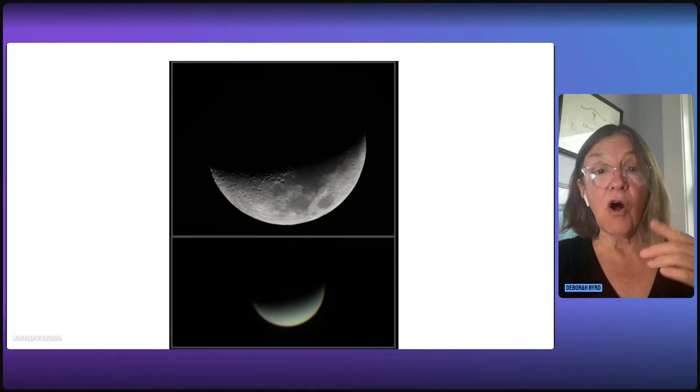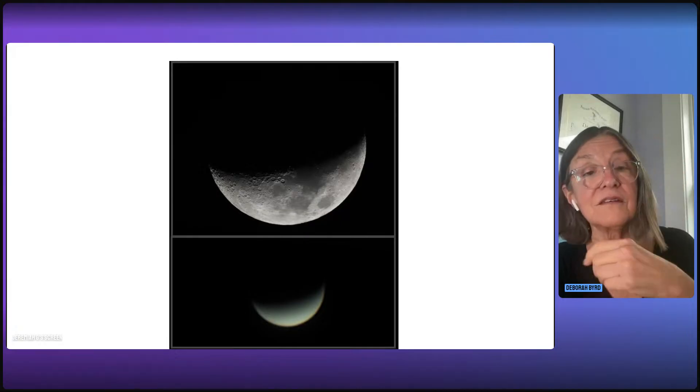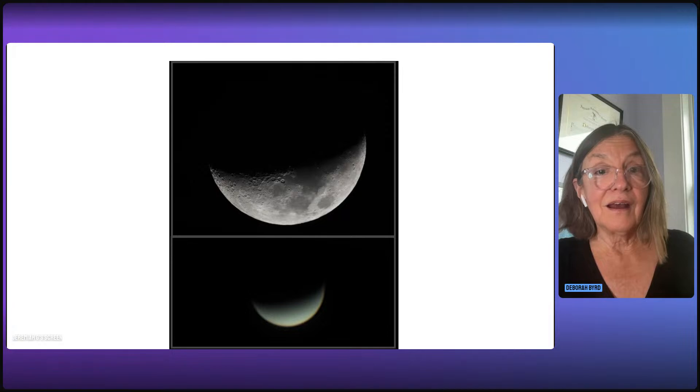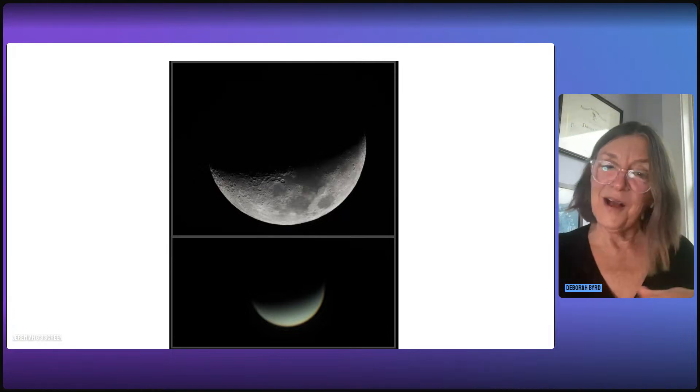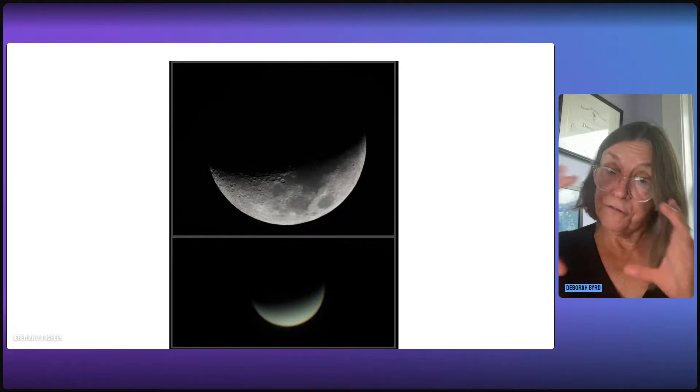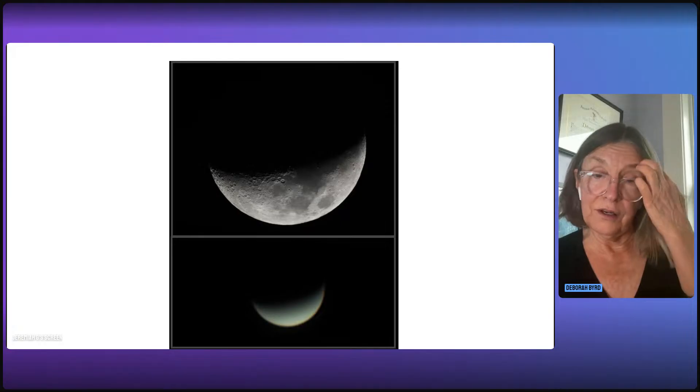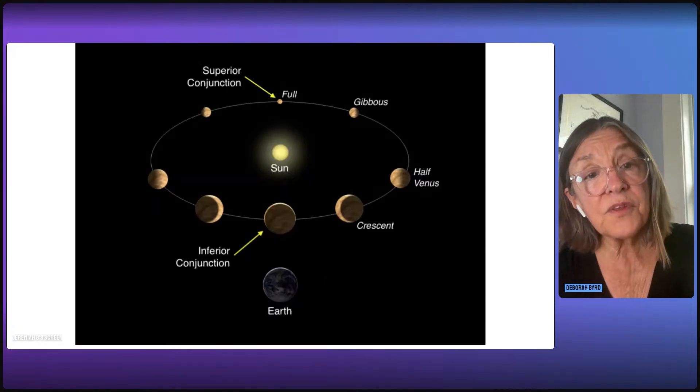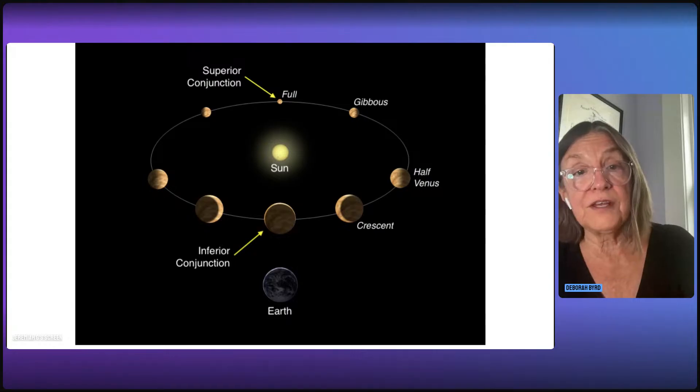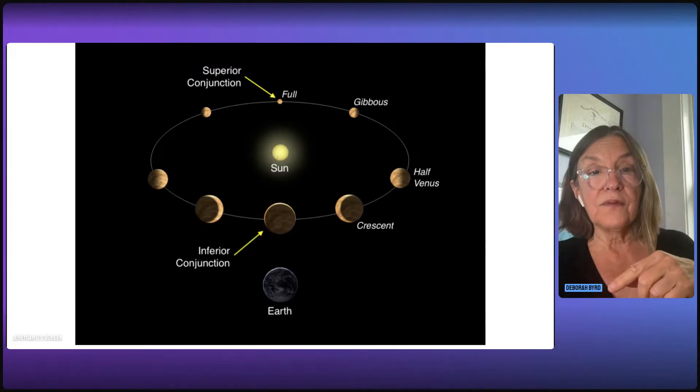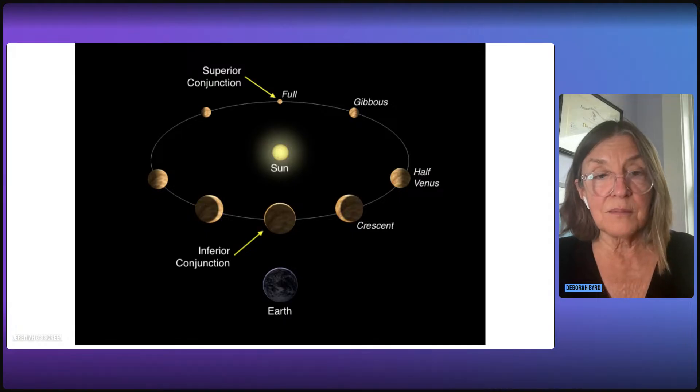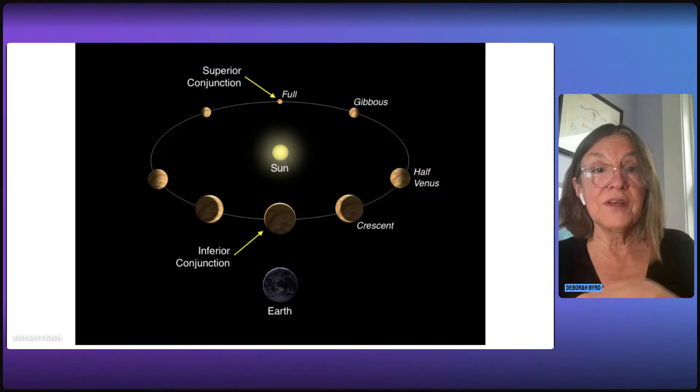And in fact, Venus is always in a crescent phase when we see it at its brightest from Earth. And if that seems contradictory, that a crescent planet could look brighter than the fuller planet that we see at other times, well, here's why it's not. So this diagram shows the orbit of Venus, and again, Venus orbits one step inward from Earth around the sun. And in this image, the Earth is at the bottom of the image, and Venus is about to go between us and the sun.